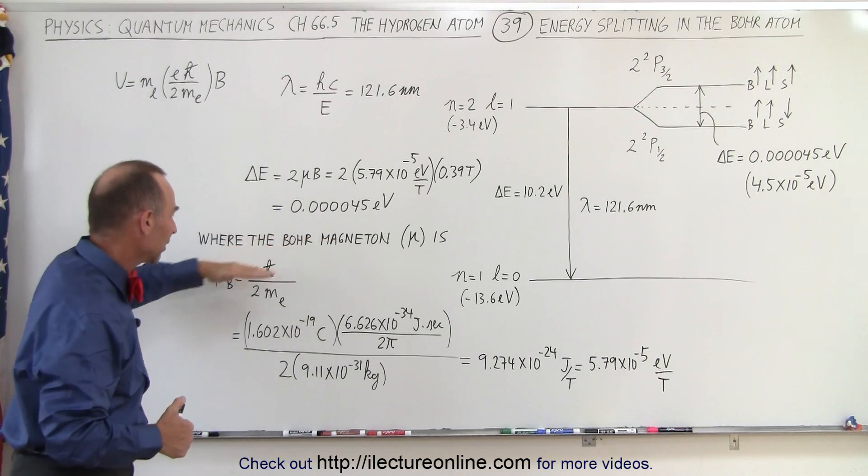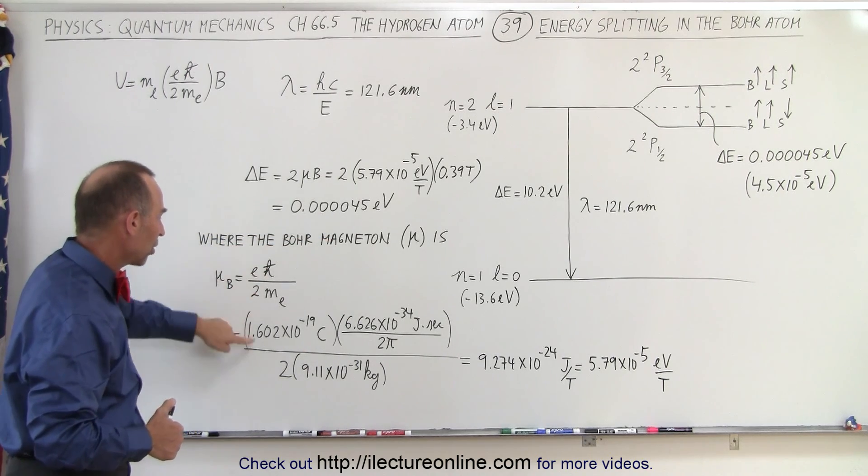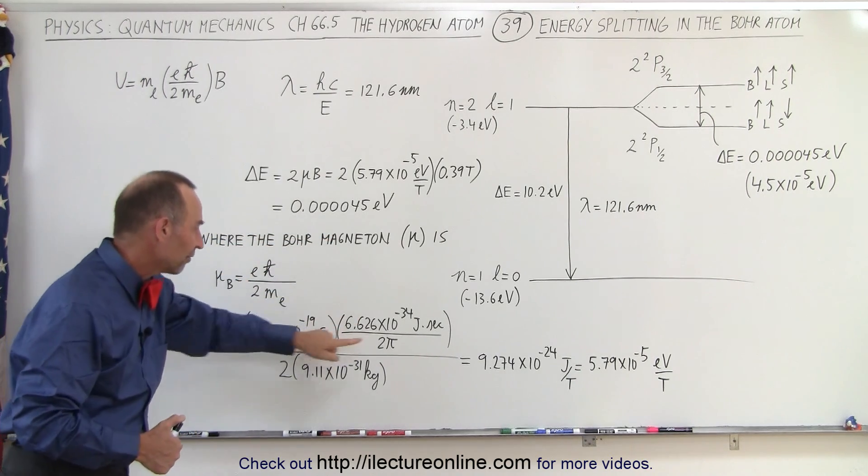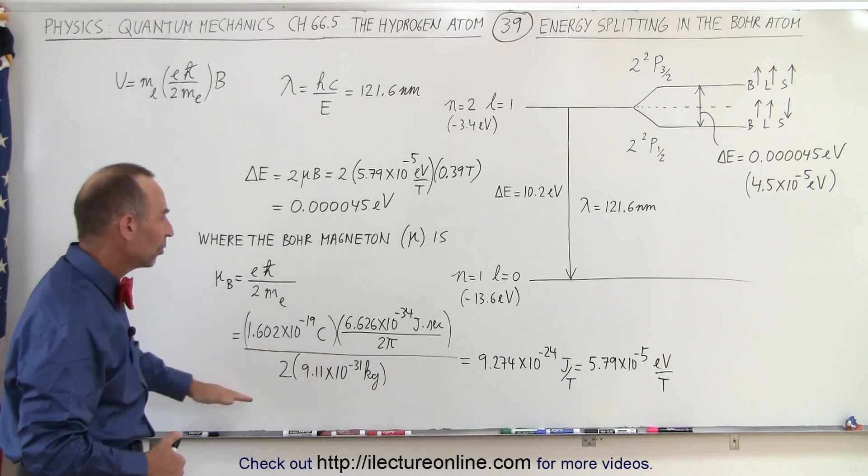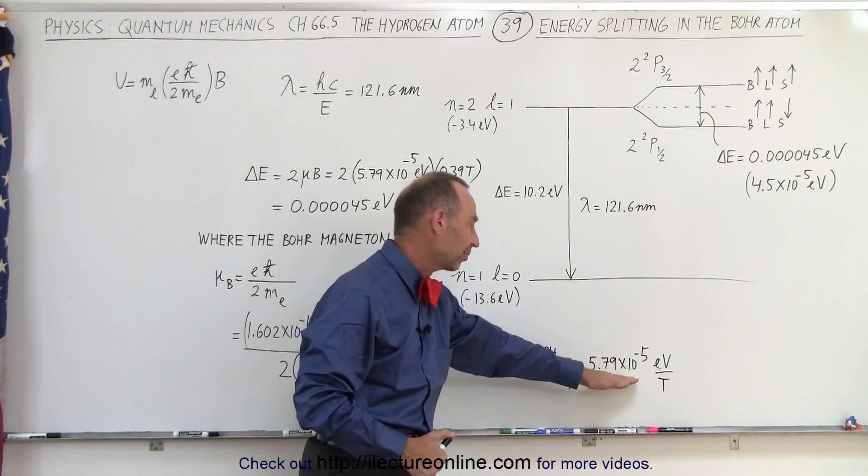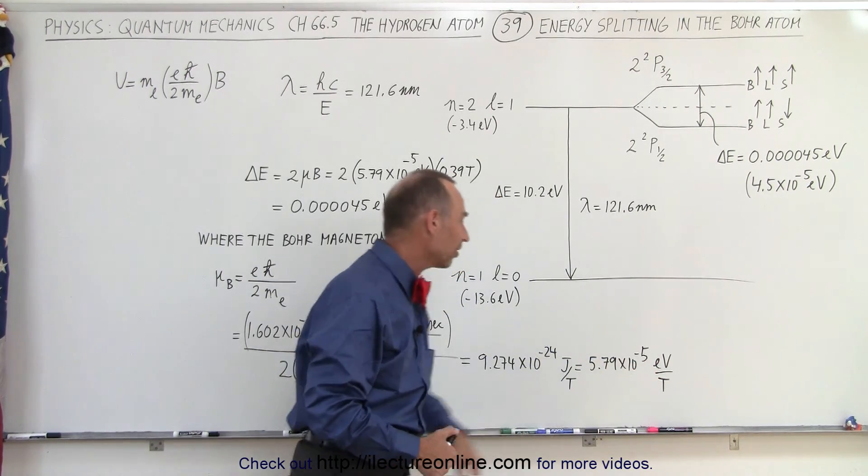So the Bohr magneton can be calculated as follows. The electric charge, Planck's constant divided by 2 pi, divided by 2, and divided by the mass of the electron, which then gives you a value of 5.79 times 10 to the minus 5 electron volts per Tesla.